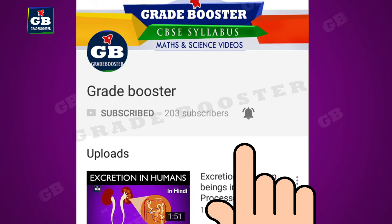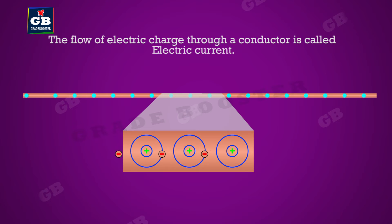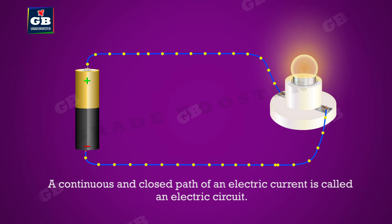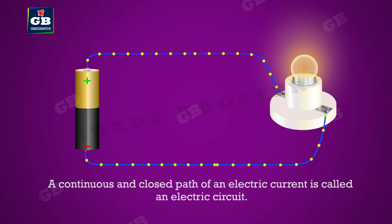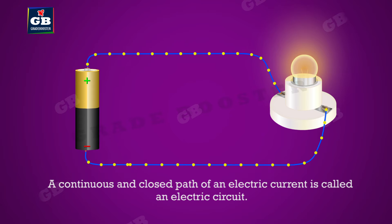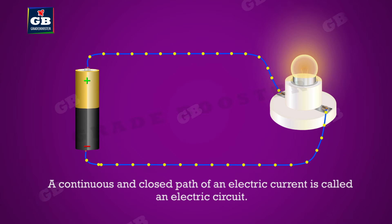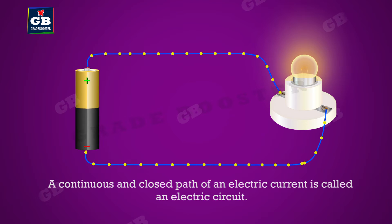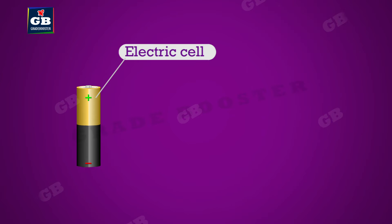The flow of electric charge through a conductor is called electric current. A continuous and closed path of an electric current is called an electric circuit.